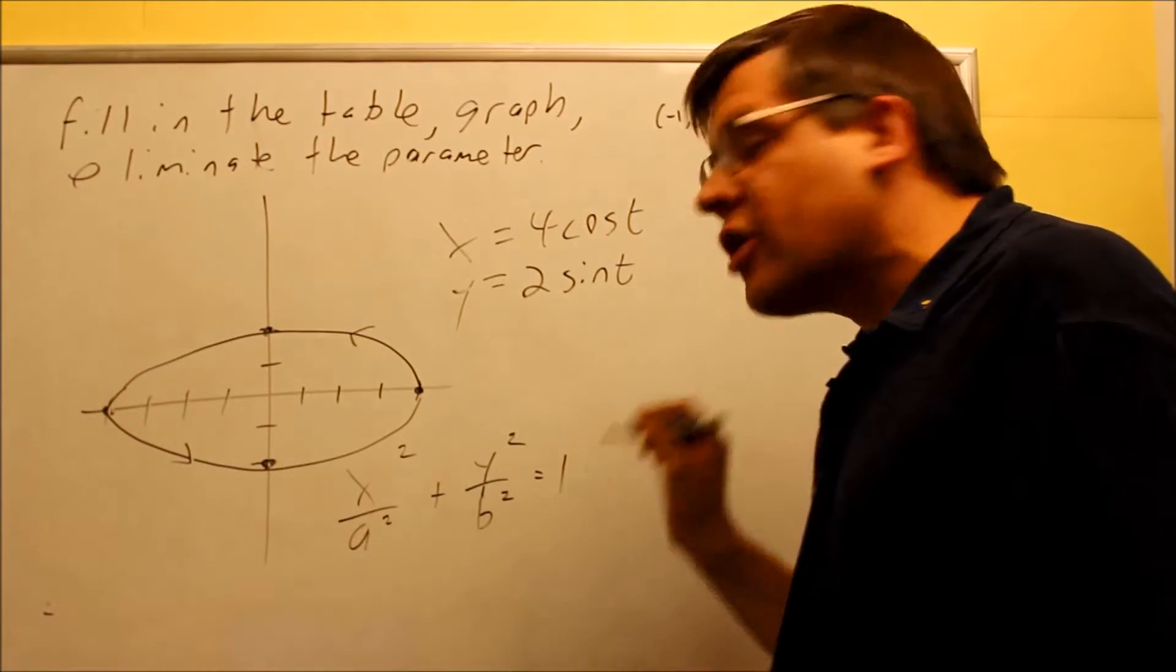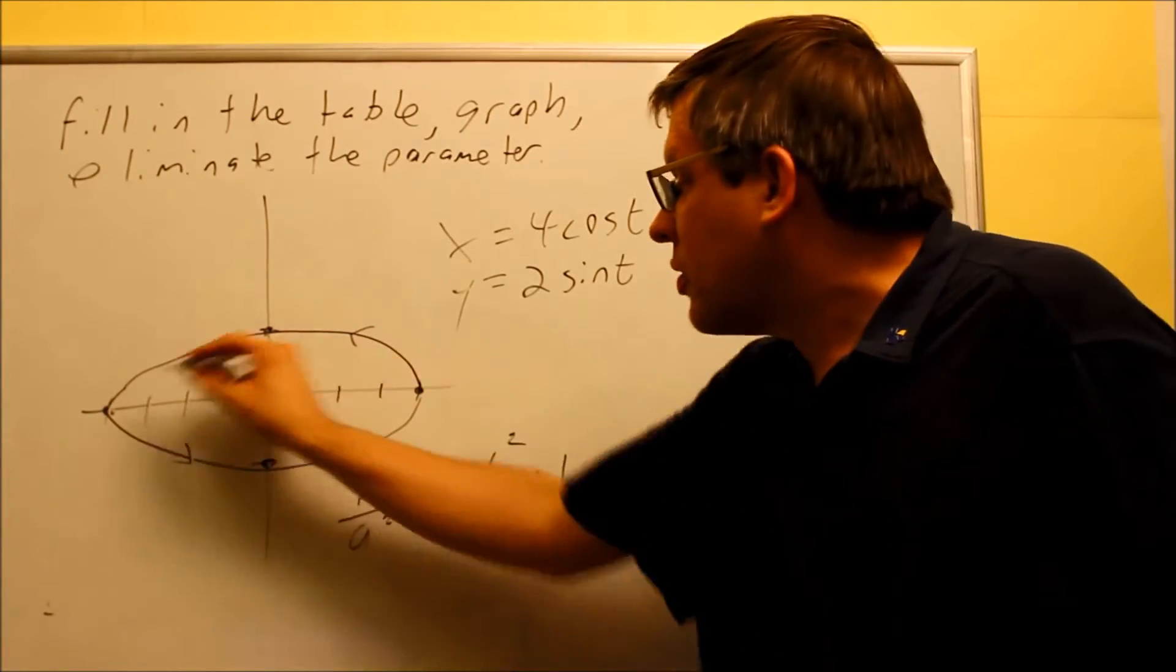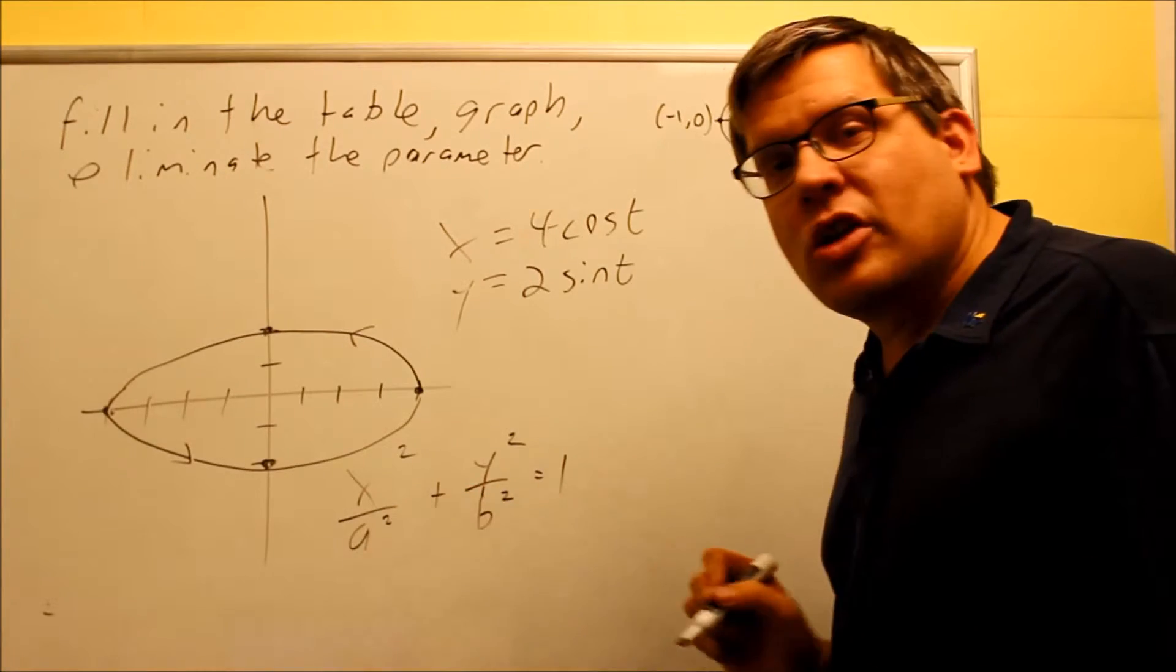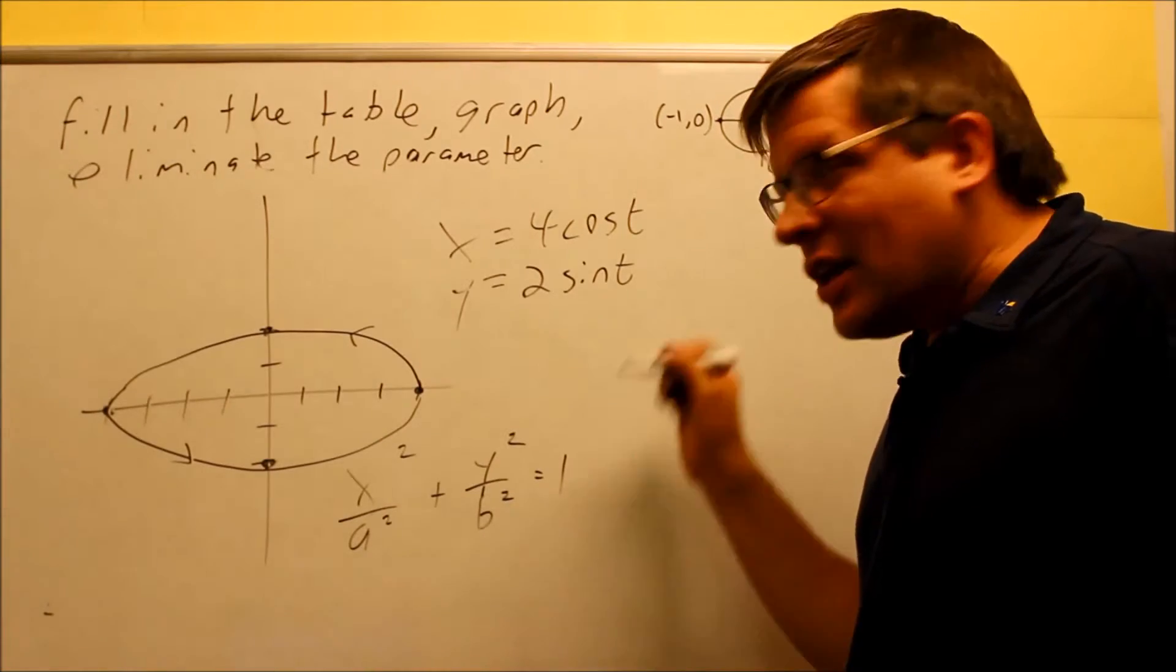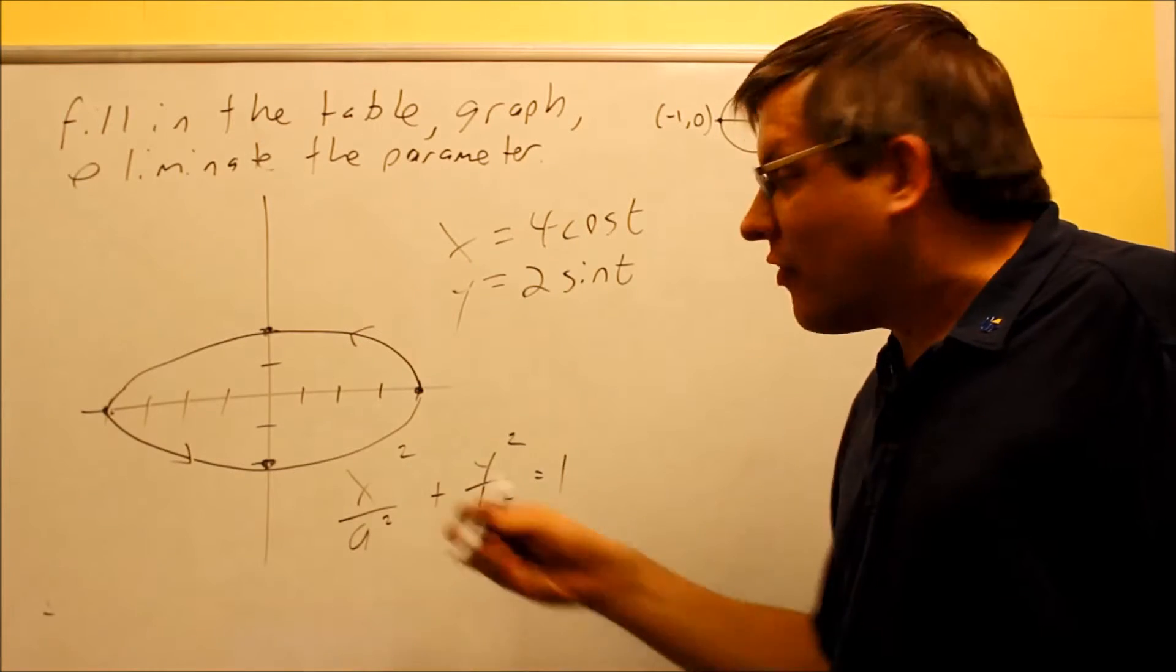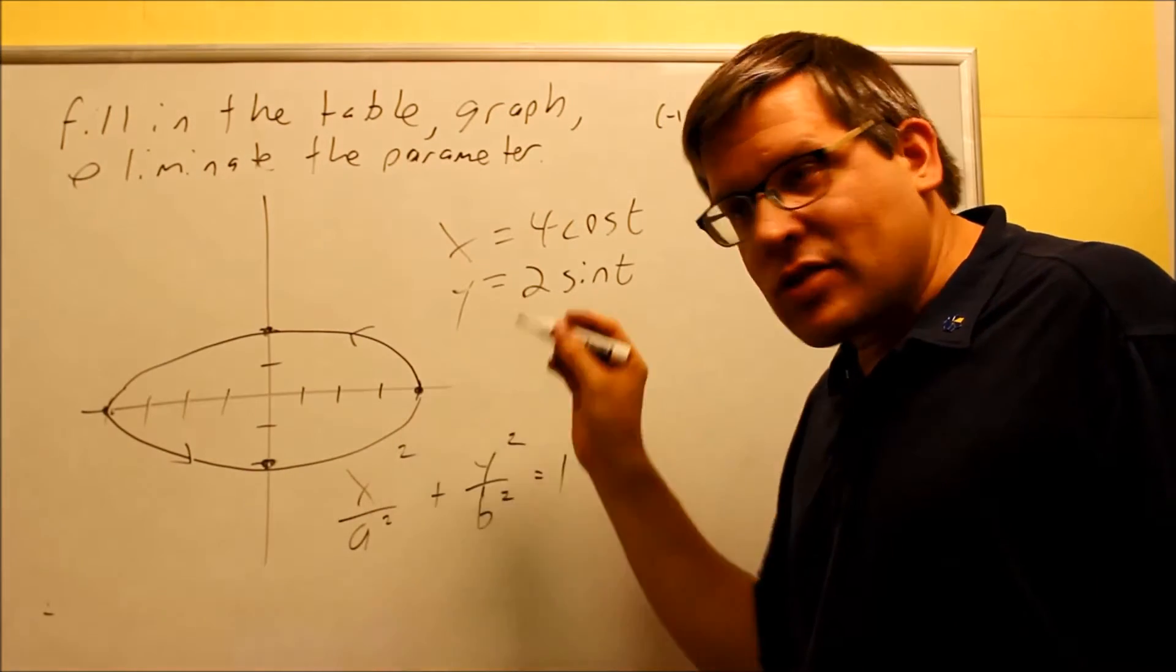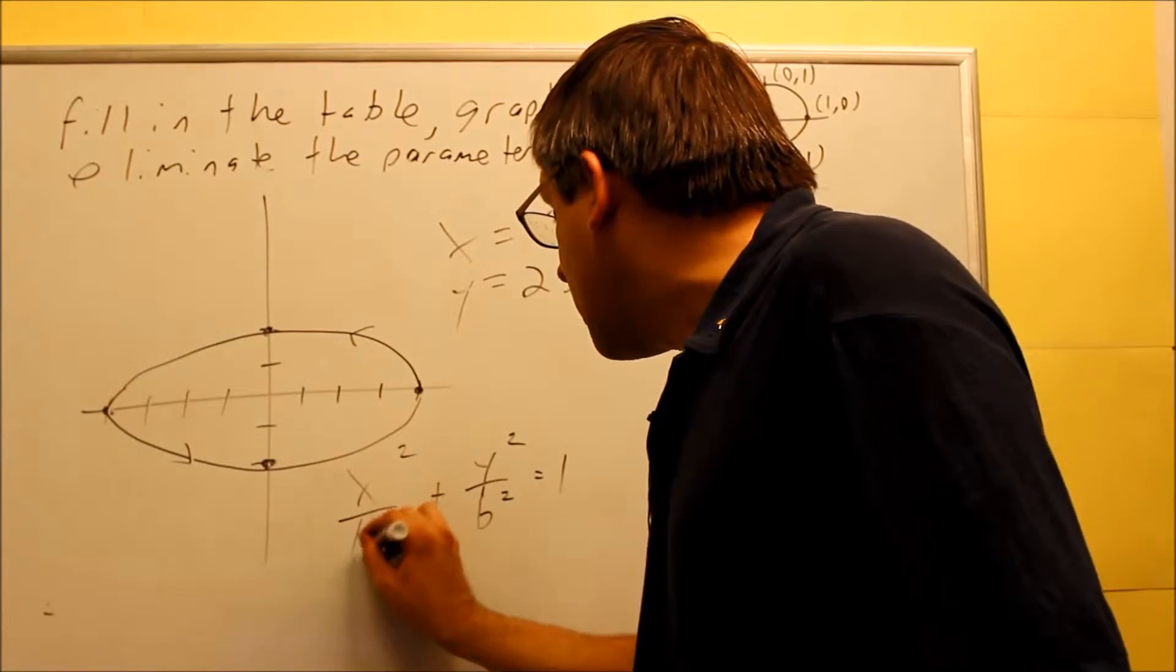So remember, with ellipses, the larger number has to go underneath the variable where it's opening up to. So since it opens up left and right, it's opening in the x direction. We've got the larger number is going to be underneath the x. So here's our basic formula that we're going to start with. And then what I want to do is just read the a and b values off the graph itself. a is the distance from the center to the vertex. That's going to be 4. So I can go ahead and put 4 squared in there. That's going to be 16.